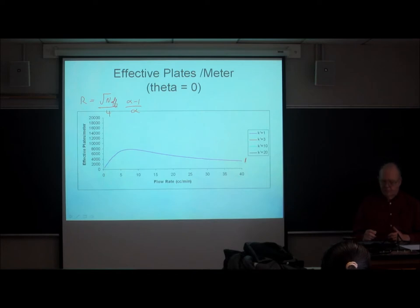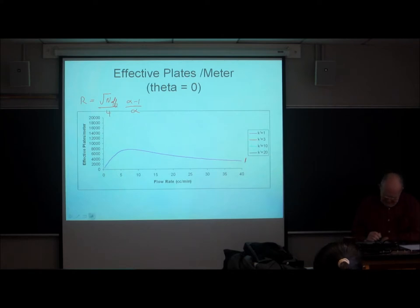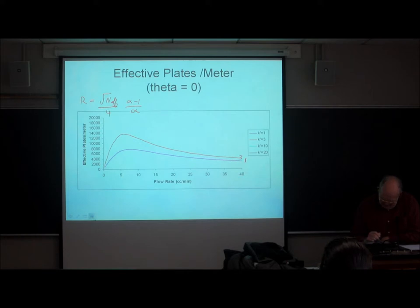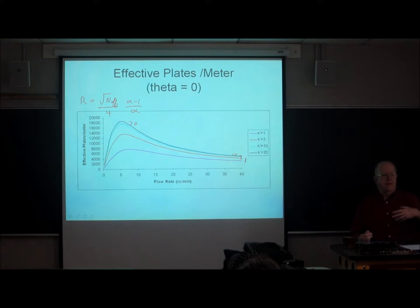There's no point in plotting K prime of zero because the effective plate number when K prime is zero is zero — anything times zero is zero. As I increase K prime, I see an increase in the number of effective plates per meter. This is K prime of three, then K prime of 10, then K prime of 20, and it doesn't do you much good to increase K prime any further.